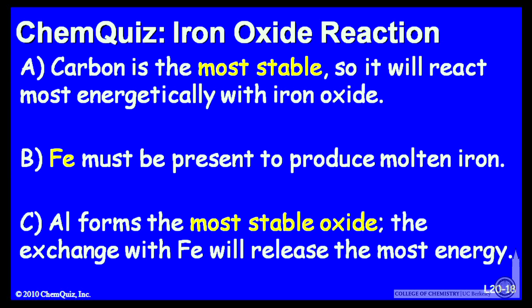Let's look at a possible explanation for each answer. A: carbon is the most stable, so it will react most energetically with iron oxide. Or B: iron must be present to form molten iron. Or C: aluminum forms the most stable oxide, so the exchange with iron will release the most energy. Think about those three and make a selection.